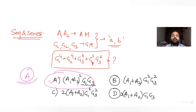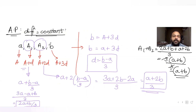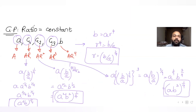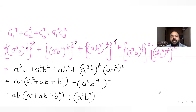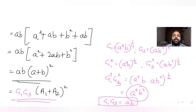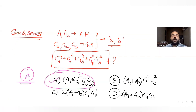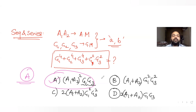So the answer is option A. We first found the two arithmetic means a1 and a2, then the three geometric means using GP concepts, simplified the expression to ab(a+b)², and matched it to (a1+a2)²·g1·g3. I hope you understood this. Stay tuned for more questions, and please like, share, and subscribe to the channel.